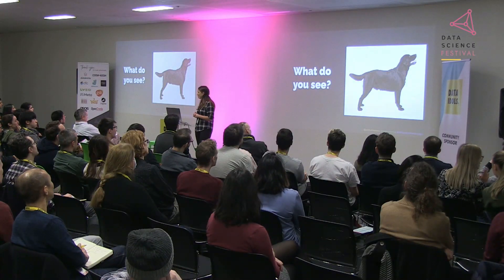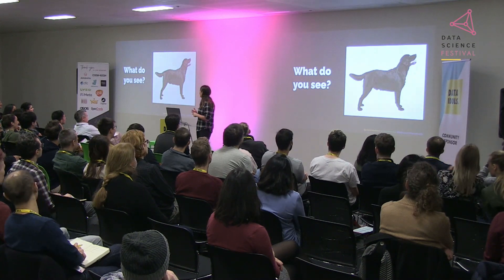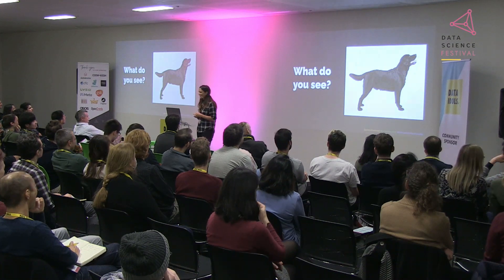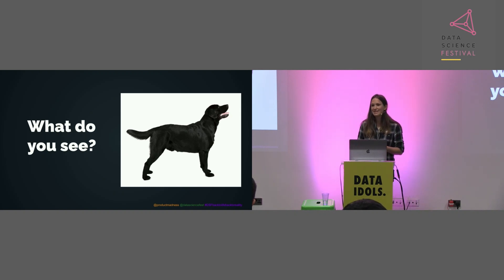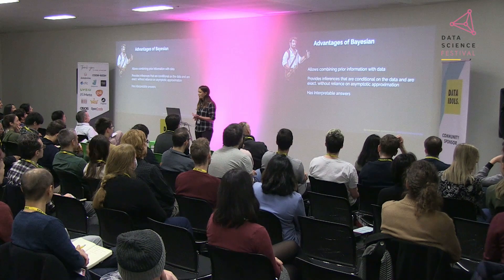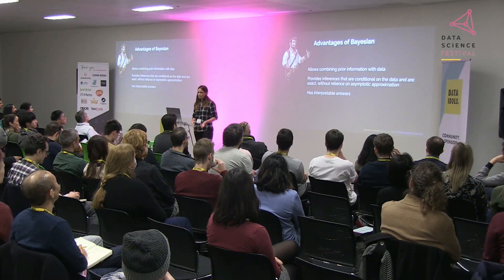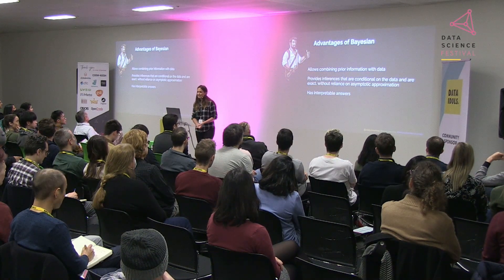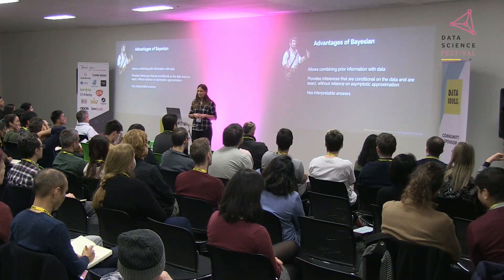So a quick question: what do you see here? Most people would say a black dog — in which case I would say you're a Bayesian. Because if you were a frequentist you would have no prior knowledge and you would say half a black dog. In everyday decisions we are generally making decisions in a Bayesian way, which makes sense to use it in our analysis as well. The advantages of Bayesian statistics are that it allows us to use prior information with our data, provides inferences that are conditional on the data and exact without reliance on asymptotic approximations, and gives interpretable answers.